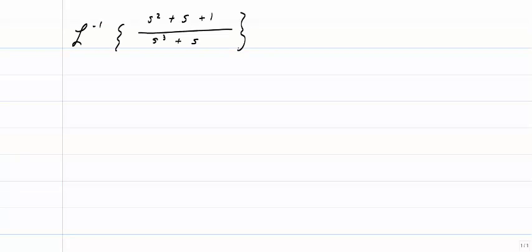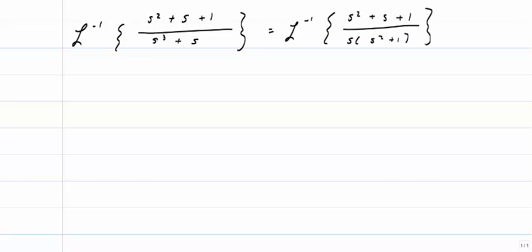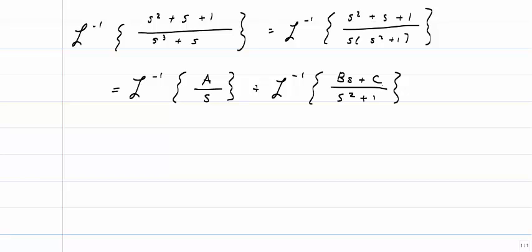This is going to get more complicated, so let's look at a more difficult example. In this section I've included refresher information on partial fractions, which we'll be using a lot when finding inverse Laplace transforms. If asked to find the inverse Laplace of an expression whose denominator is s³ + s, there's nothing in the table that matches directly, but I can factor the denominator. I can then split it into partial fractions: A over s plus (Bs + C) over s² + 1.